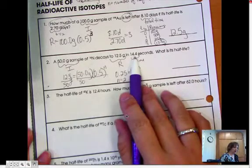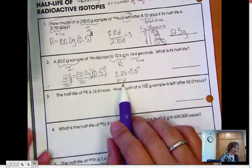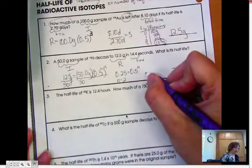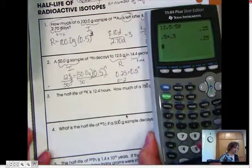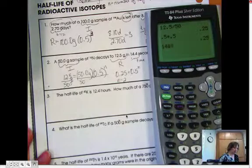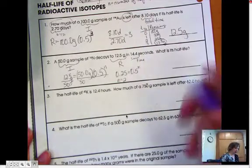So if n equals 2, what is its half-life? 14.4 seconds go by and two half-lives. So one half-life has to be half of 14.4. So 7.2 seconds.